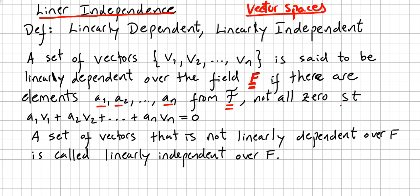such that it's linearly dependent if a1 times v1, so this one from the field times this one from the vector set, a1 times v1, a2 times v2, etc., till an times vn, they equal 0. If this happens,